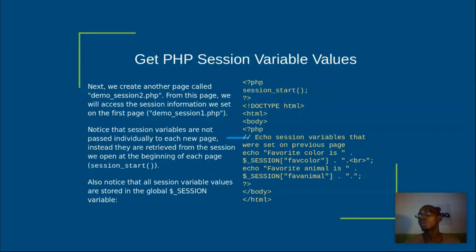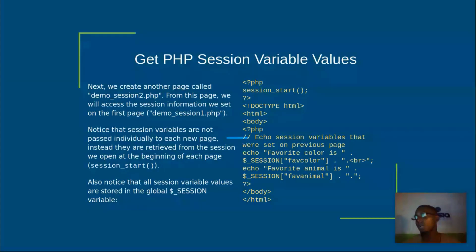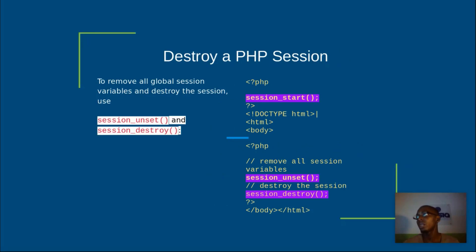Now, how do you get a PHP session variable? Just like a normal array in PHP, you get a session by its key name, because a session is like an associative array that has key and value pairs. You can get these names and use them for whatever you want. You can also print out the whole session and so on.